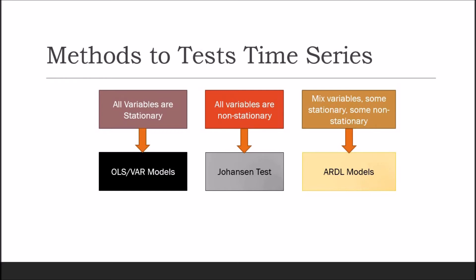When all variables are non-stationary, the Johansen test is used to determine co-integration among the study variables. This test method is based on the relationship between the rank of a matrix and its characteristic roots.